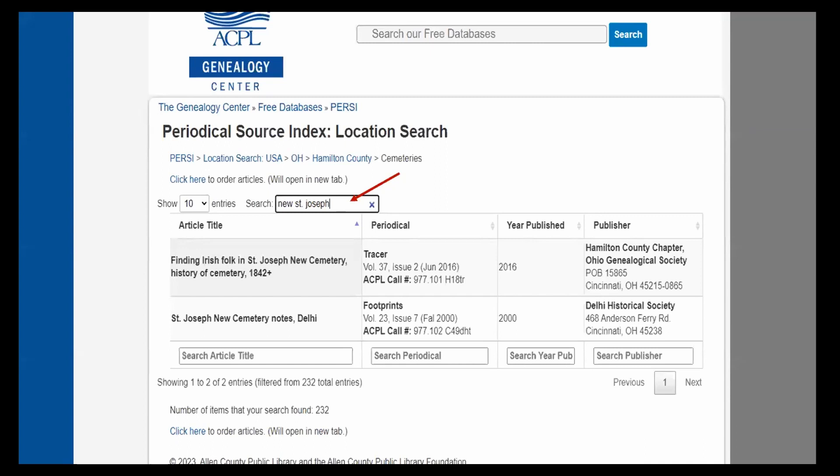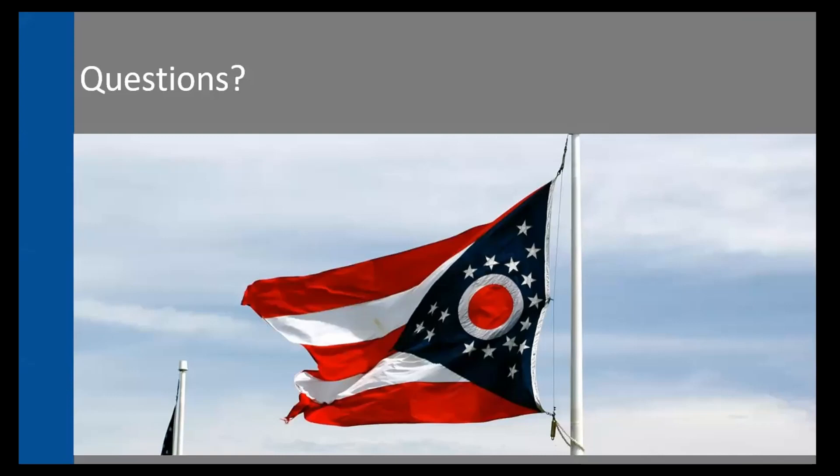That brings us to the end and now we'll have time for questions. The first question: are there records available of licensed peddlers in Ross County, Ohio in the 1850s? I'm not sure — that's not something I've researched before. Usually something like that, if it survived, it's going to be with the clerk of courts because that's where they would have had to file it. So if you can't find it online, contact them directly because those records are going to be kind of unique.